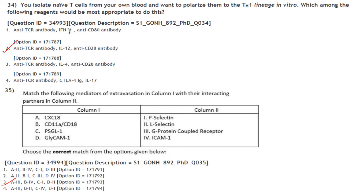Match mediators of extravasation with their interacting partners: CXCLA pairs with G-protein-coupled receptor; CD11A/CD18 pairs with ICAM1; PSGL1 pairs with P-selectin; and GLYCAM1 pairs with L-selectin. Answer: A3, B4, C1, D2. Option 3.